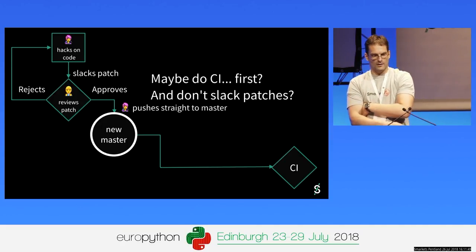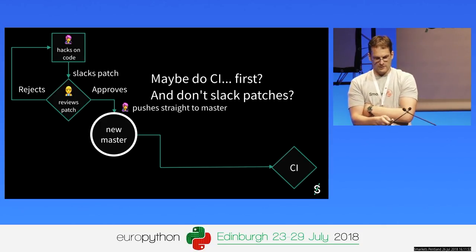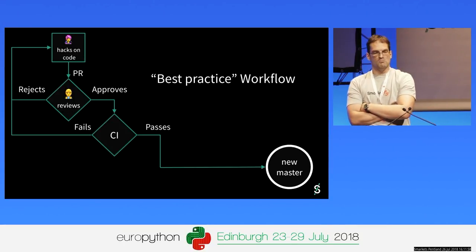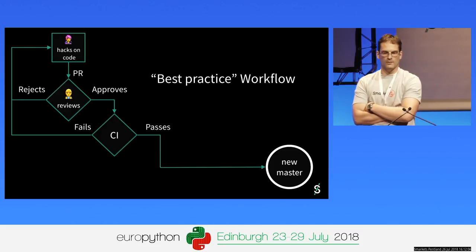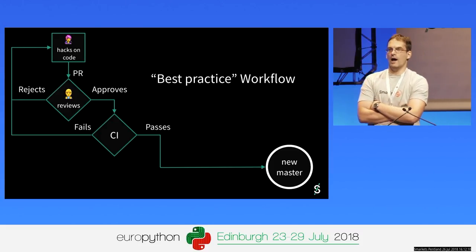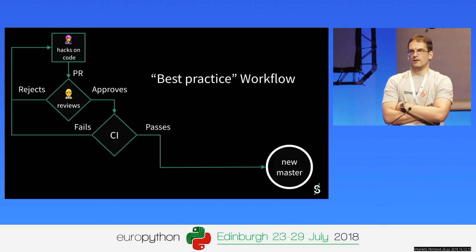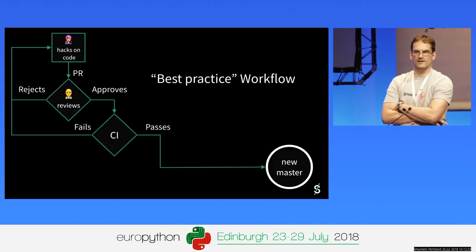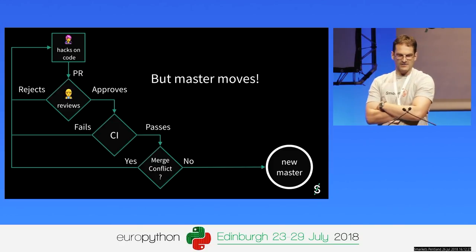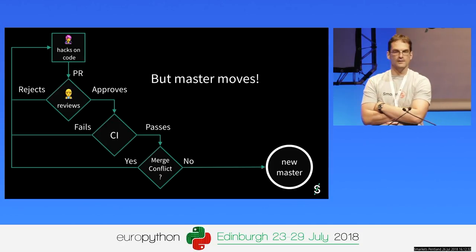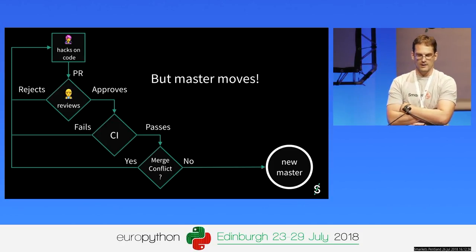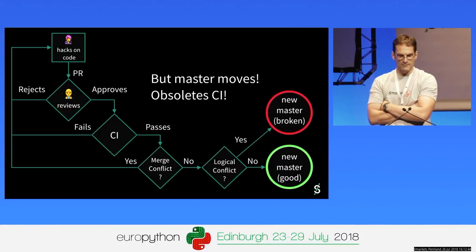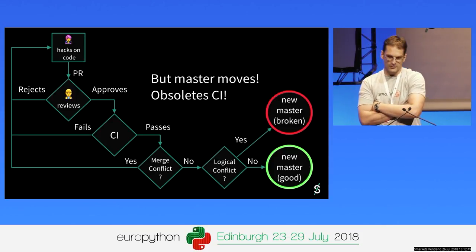In order to get this happening, I had to get approval to get GitLab Enterprise Edition, and then we were closer to the typical best practice workflow: you send a pull request, someone reviews it in some review system, it passes CI, and then it gets merged into master. But there are complications because master moves. There's another choice point: do you have a merge conflict? If yes, you go back to square one. If no, it becomes new master. But master moving also obsoletes your CI results — the next choice point is whether you have a logical conflict. If yes, you've got a broken master.